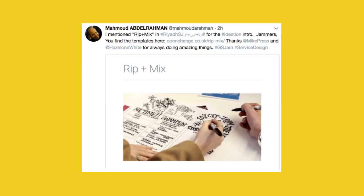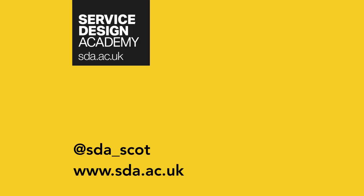In Riyadh, Saudi Arabia, leading international service designer Mahmoud Abdelrahman is an advocate of the RIP & MIX method. RIP & MIX brings everyone into the creative phase of service design, enabling designers and non-designers to develop new ideas. The method transforms non-design-trained participants' view of themselves as not creative, by enabling them to generate both implementable quick-win solutions and blue-sky future scenarios. The visual aspects of the method enable conversations and idea generation to be shared in teams, and the method can also be used individually to help creative thinking.